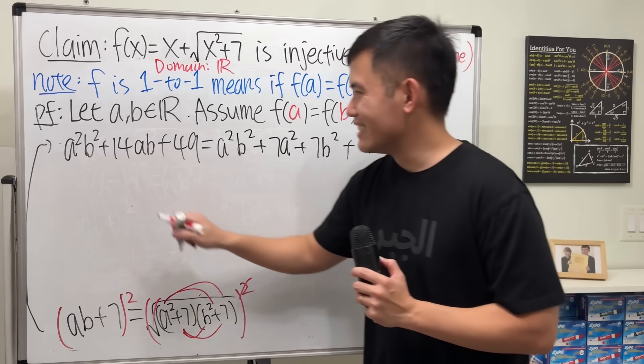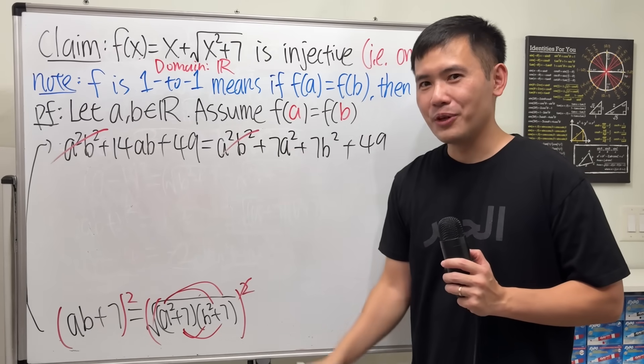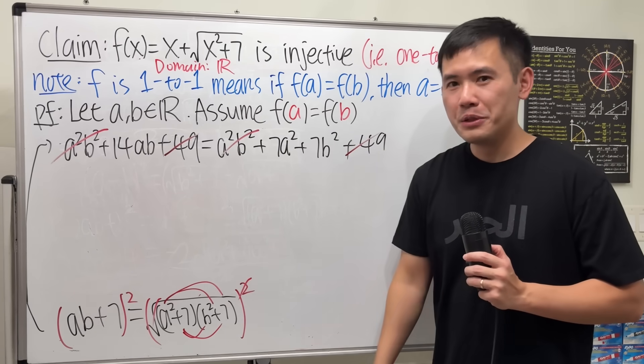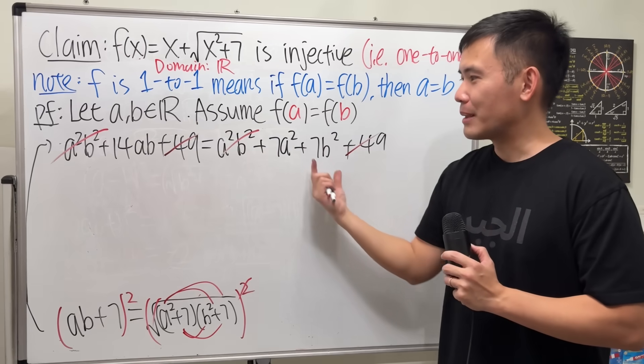Have a look, this is so nice. A squared b squared on both sides, they cancel. 49, 49, they also cancel. And what else is best? This, subtract it too. You know what else is nice? Look at this.